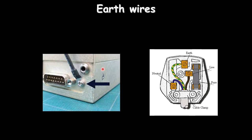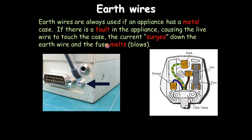Earth wires are connected to the metal cases of electrical appliances. If a fault causes the live wire to touch the case, touching it would give you an electric shock — but because the earth wire is connected, excess current surges to earth, the fuse melts, the circuit breaks, and you're protected. Most modern appliances are double insulated — no exposed metal parts on the outside — so no earth wire is needed.